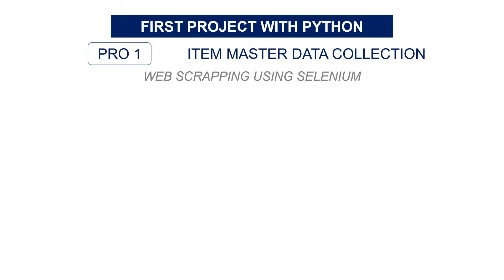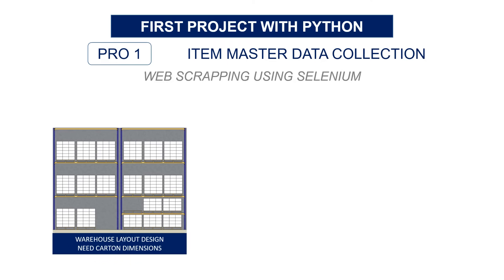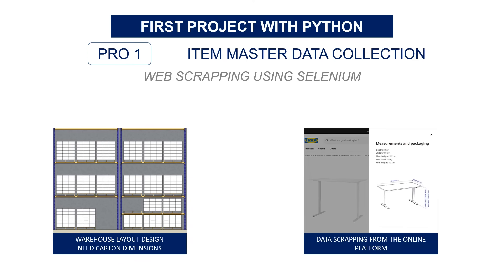Like VBA, I started learning by doing. My first project was the automation of item information extraction from an e-commerce platform. It was for a project with a furniture retailer who wanted to open warehouses for their e-commerce platform. To design the warehouse layout, I needed product package dimensions. However, the customer only provided 60% of the data, and when I asked about the missing data, they told me I could find it on the website. I learned web scraping using Python, using Selenium — a web browser automation tool — to automatically extract data from web pages. I saved several hours of manual work and avoided potential mistakes.